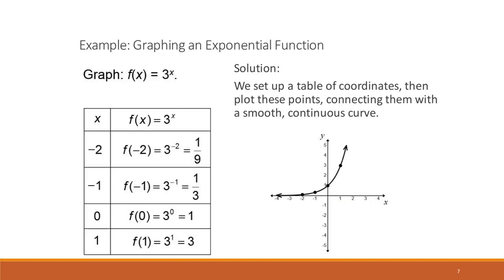So if we want to graph f(x) equals 3 to the x, we set up a table of coordinates and then plot these points, connecting them with a smooth continuous curve. And so this is a model of that example. So let's do an example together.